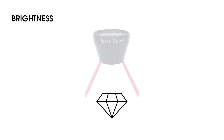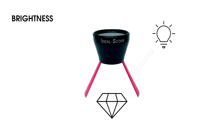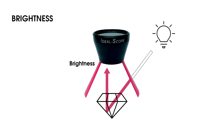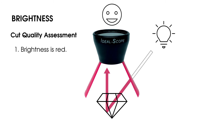When placed over a diamond, light passing through the IdealScope's cone turns red. Light that reflects inside the diamond and travels up is brightness. A viewer looking through the lens will see bright areas as red. So in IdealScope cut quality assessment, brightness is red.